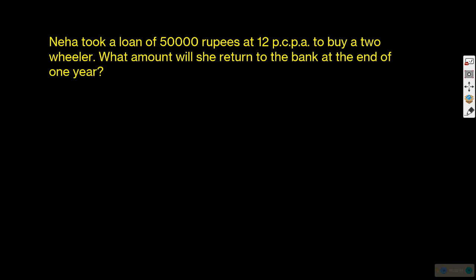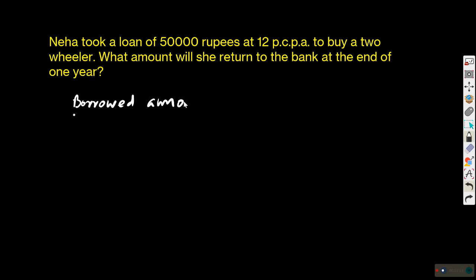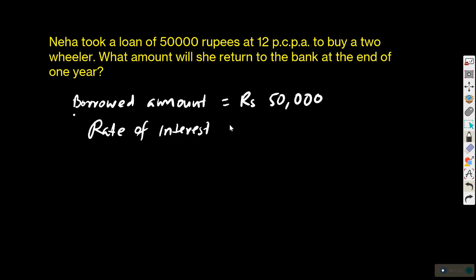Neha took a loan of rupees 50,000 at 12% per annum to buy a two-wheeler. What amount will she return to the bank at the end of one year? In the case of Neha, the borrowed amount is 50,000 and the rate of interest is 12% per annum. This means for every 100 rupees, the interest will be rupees 12 per annum — per annum means per year.